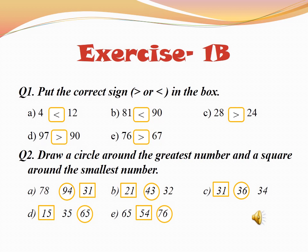As you can see on your screen, in part B we have numbers 21, 43, and 32. Which number is greatest — 21, 43, or 32? Yes, 43. So we will draw a circle around 43. And which is the smallest? 21. So we will draw a square around 21.